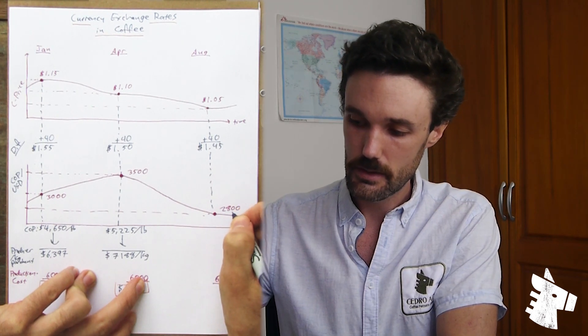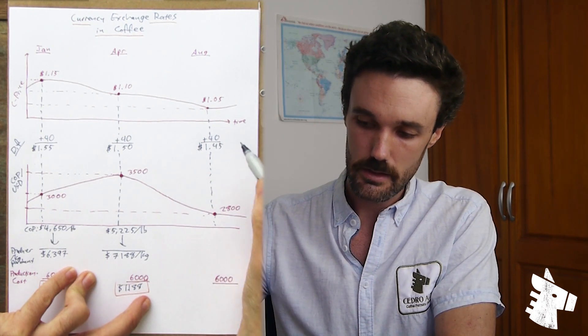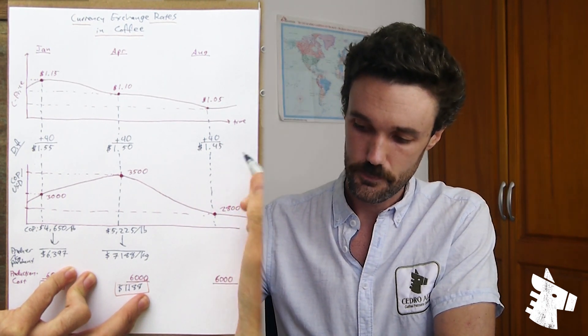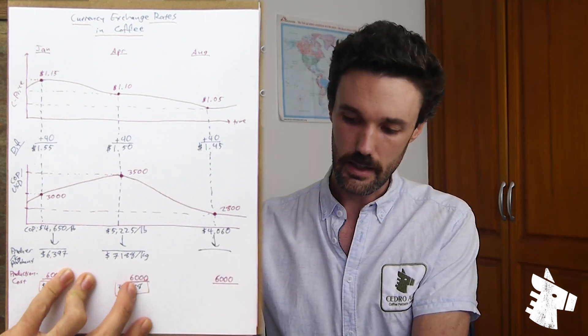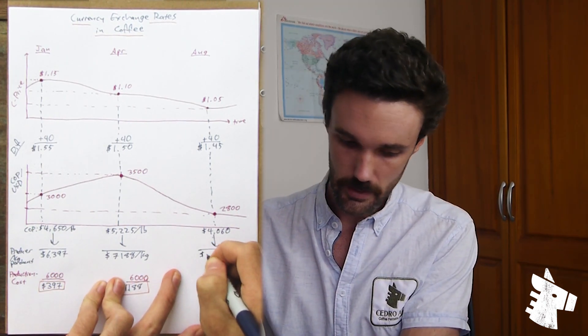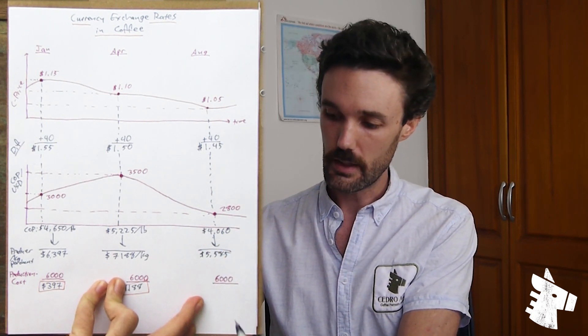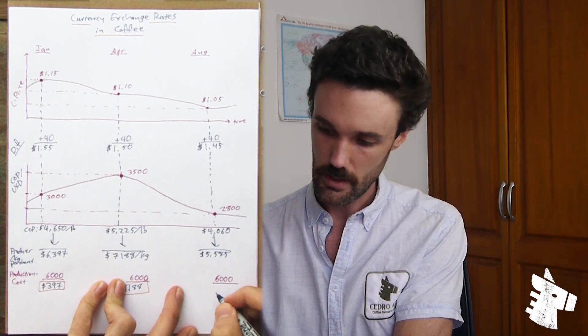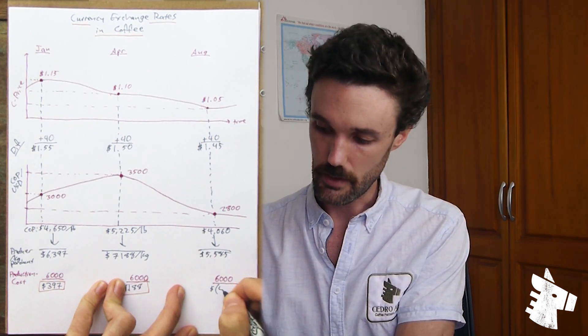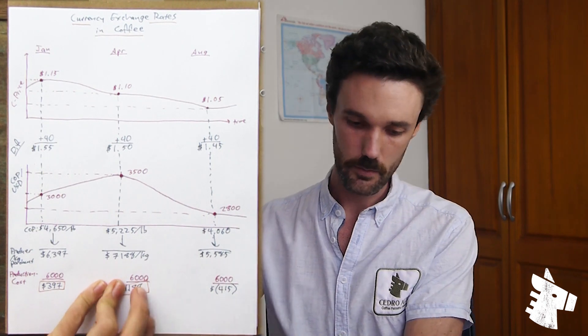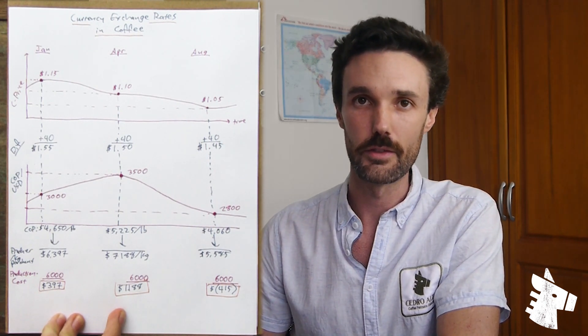In that case, because our FOB price is denominated in US dollars, our income here in Colombia is less than before. It's only 4,060 pesos. If this is the case, the amount that corresponds to the farmer is 5,585 pesos. And with a fixed production cost of 6,000 pesos, now the farmer is in the red. Every kilo of dry parchment sold, they're losing 415 Colombian pesos.